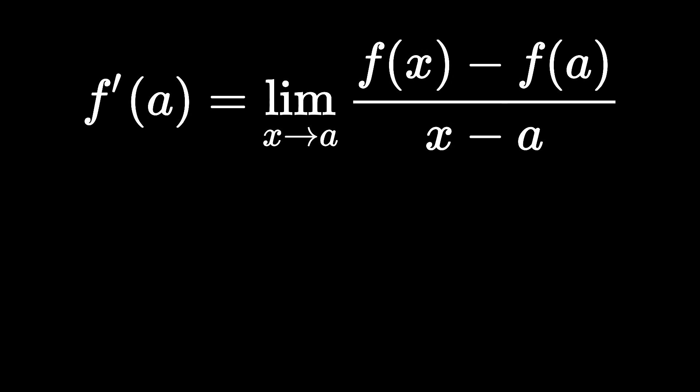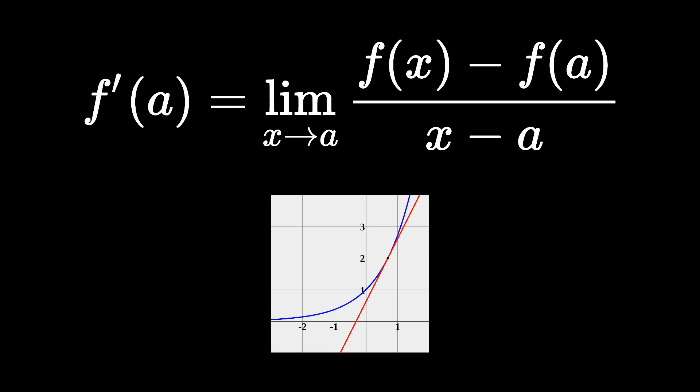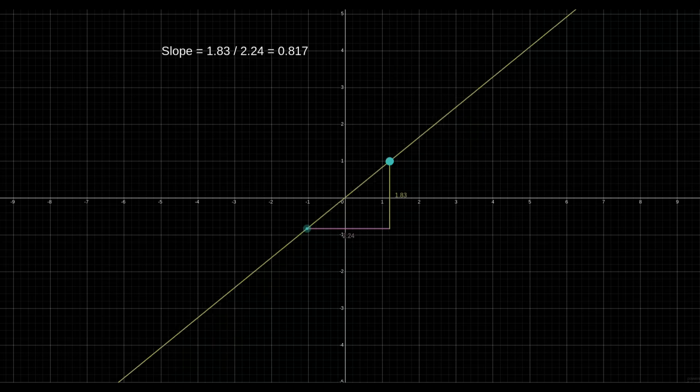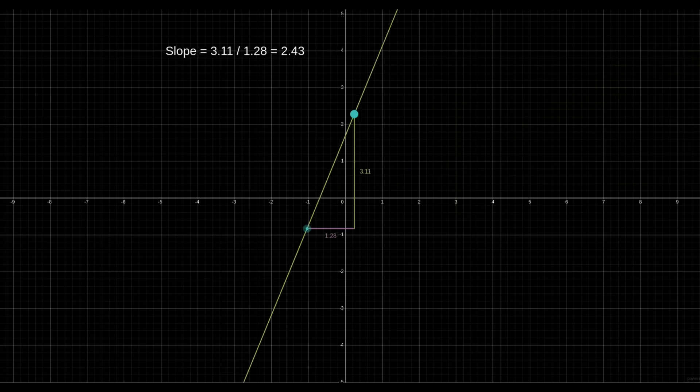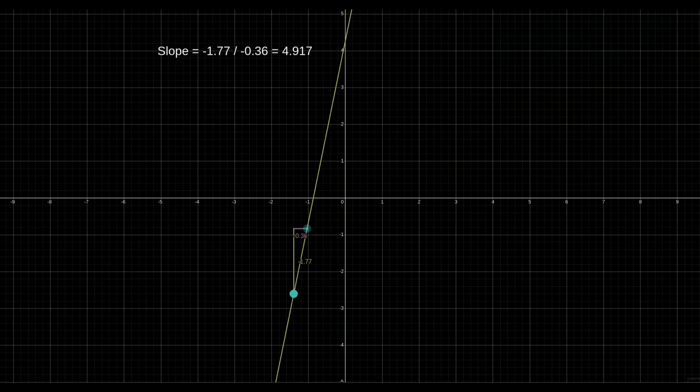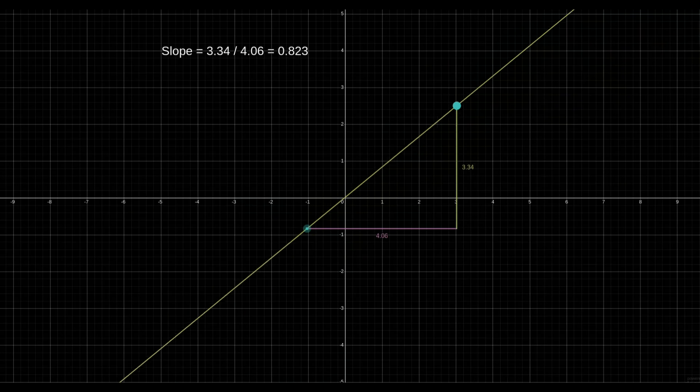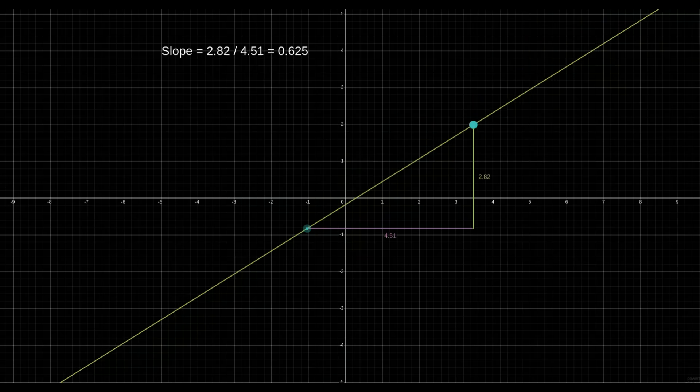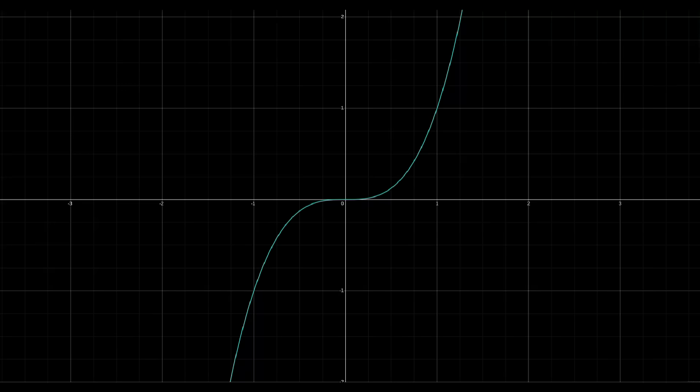For example, one of the first things that we typically do with limits is calculate a derivative, which is essentially the slope of a function at a single point. But the problem with that definition is that you can normally only calculate slope between two different points. Slope is rise over run, right? What does that even mean if the run is 0? Well, let's say that we're trying to figure out the slope of y equals x cubed at the point x equals 1. As I said, there's no direct way to calculate it.